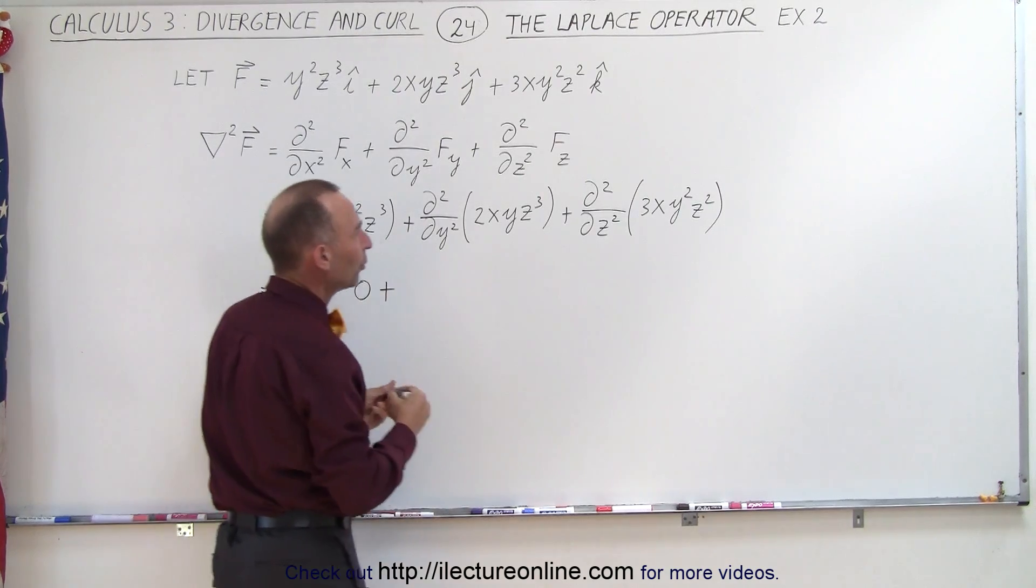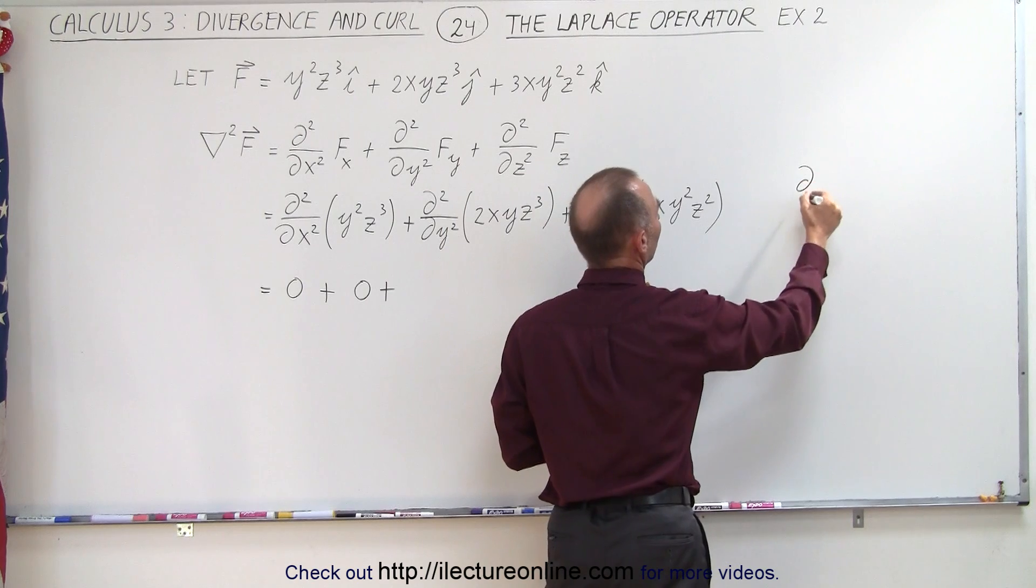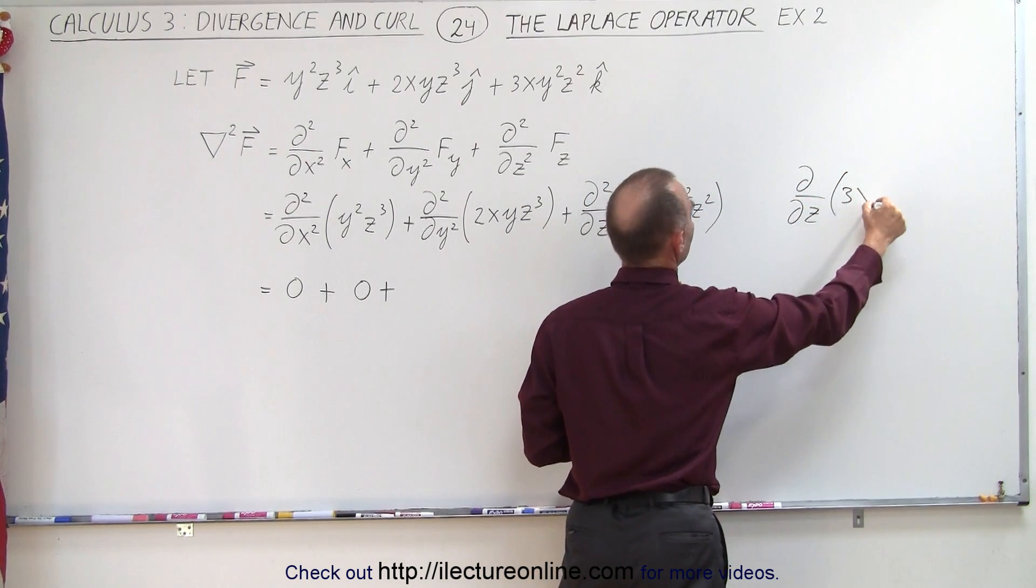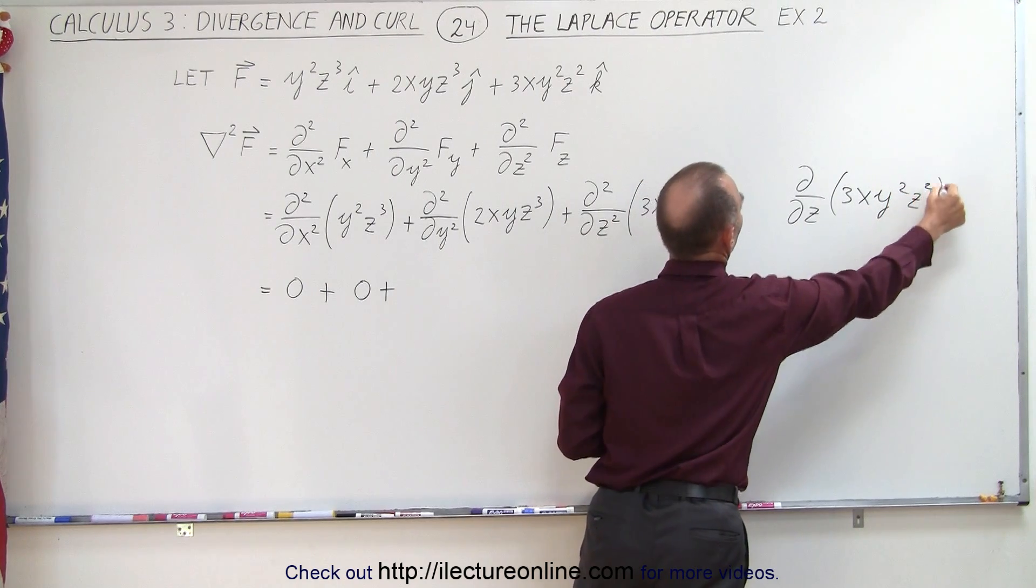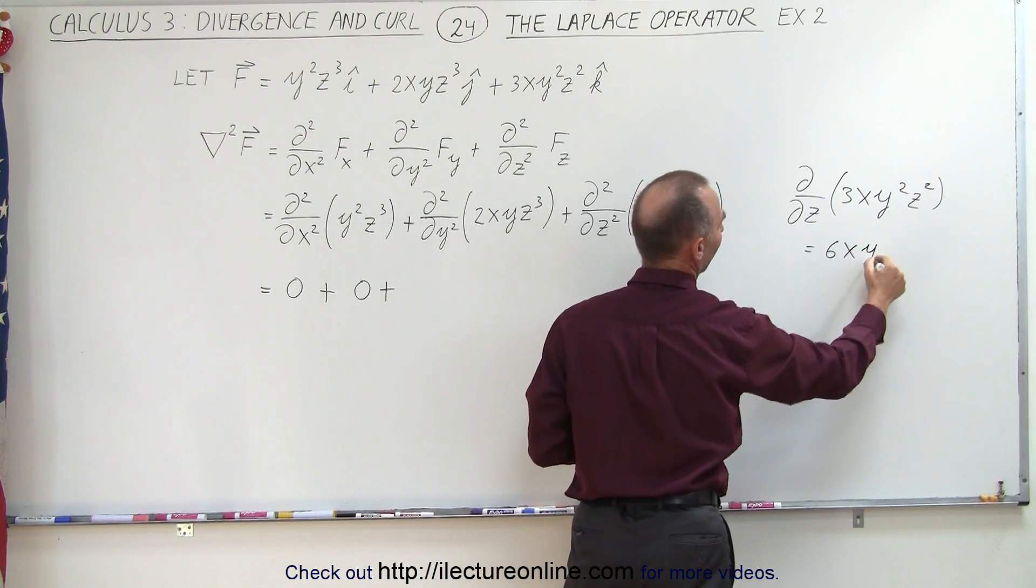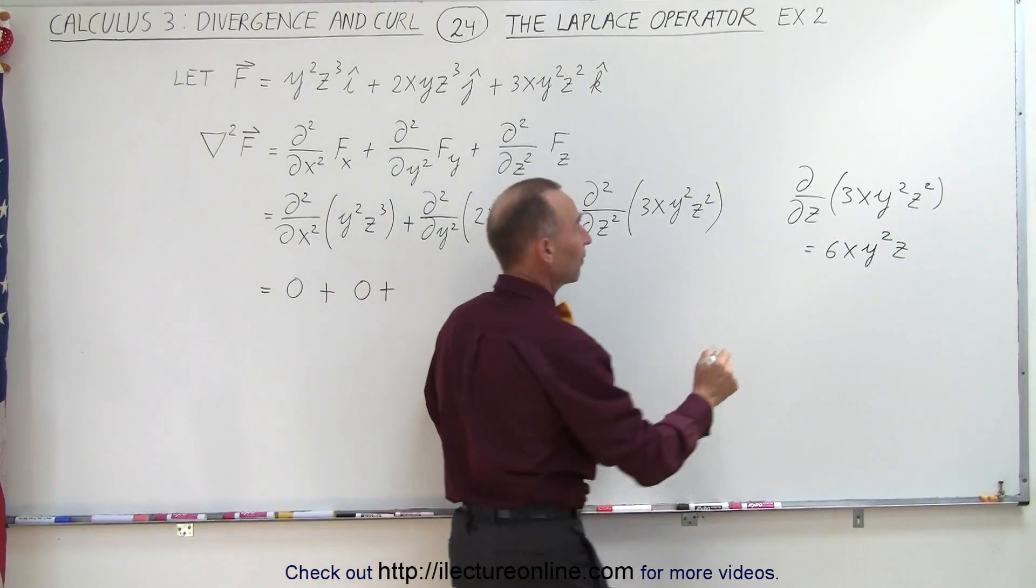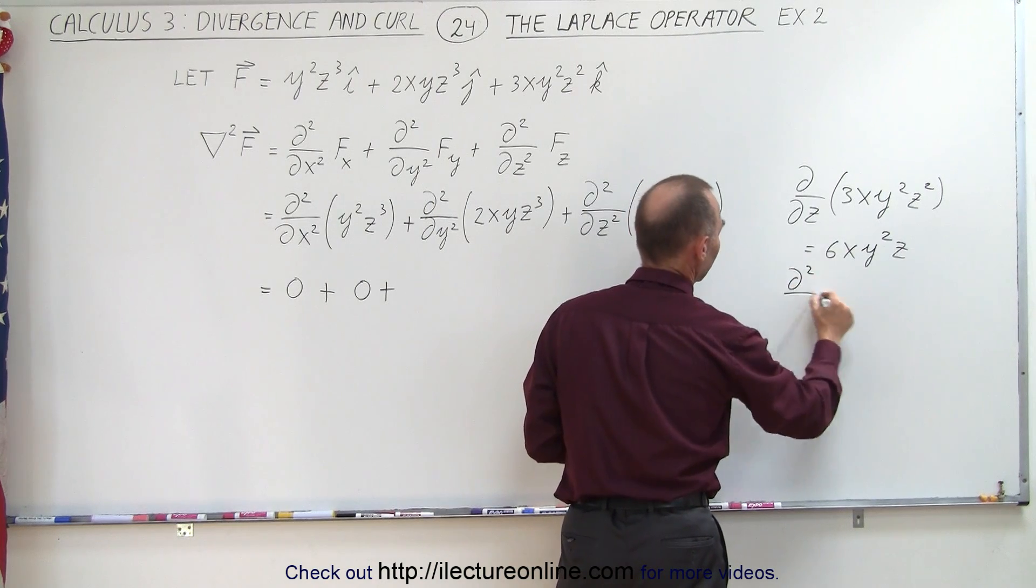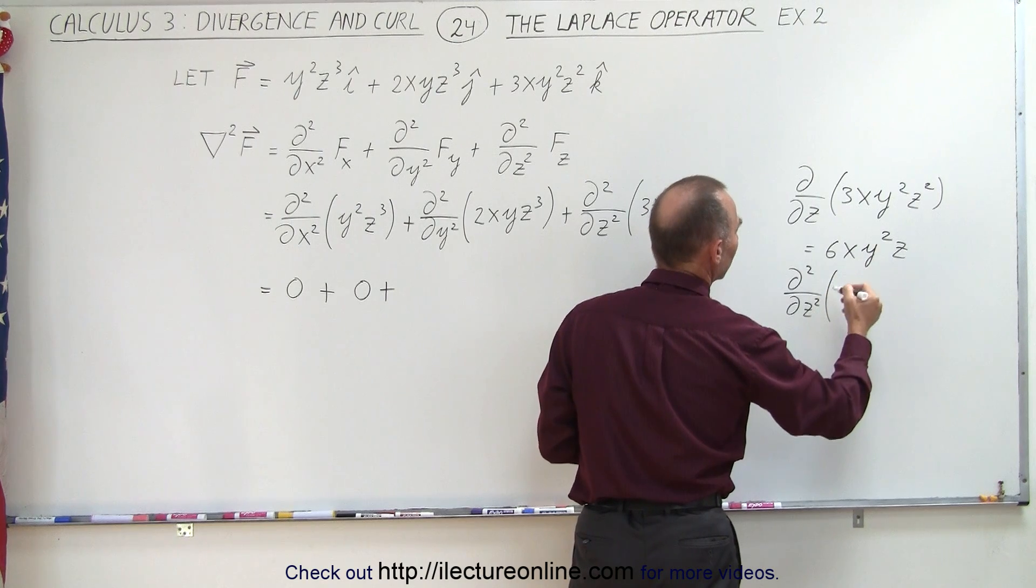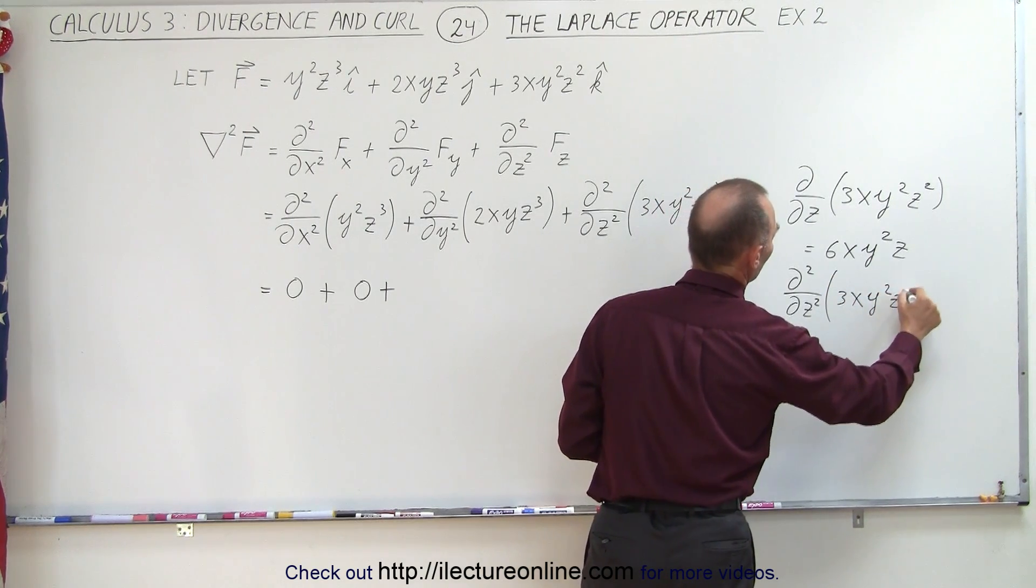Plus, now here on the third one, notice when we take the first derivative of that, so the partial derivative with respect to z of the quantity 3xy²z², that becomes equal to 6xy²z. And then if we take the second derivative of that, so the second partial derivative with respect to z squared, then that of the quantity 3xy²z².